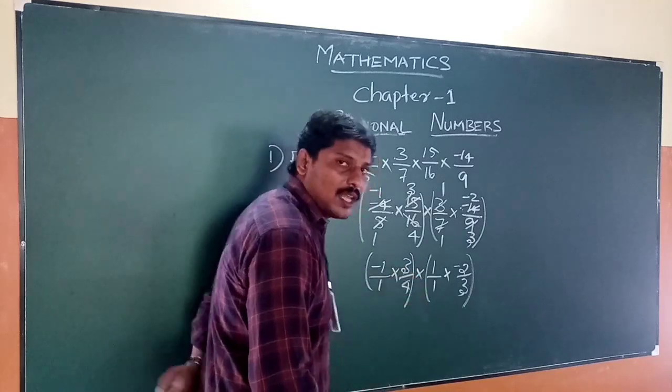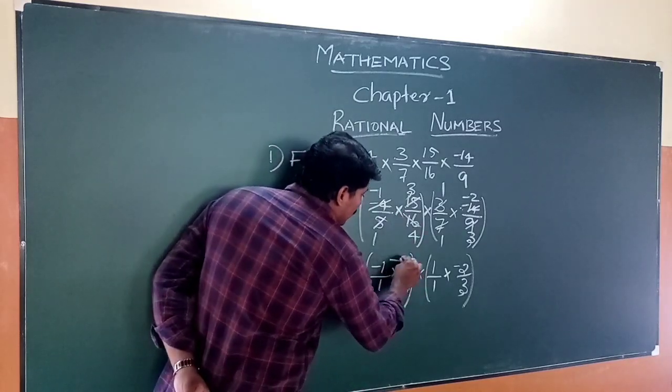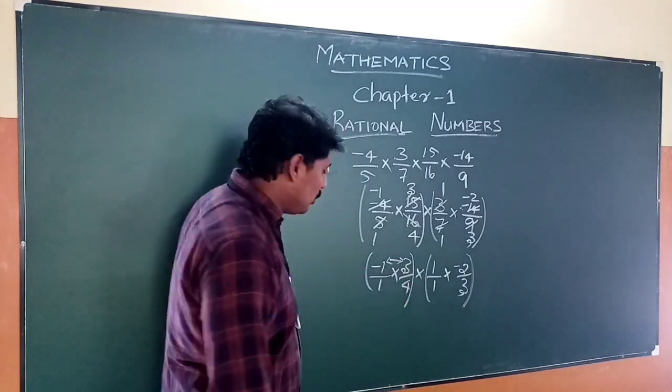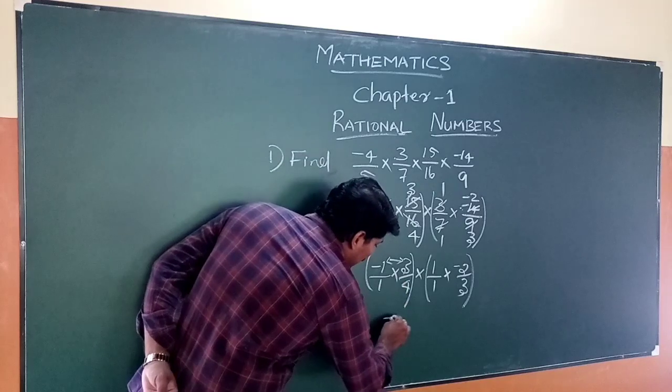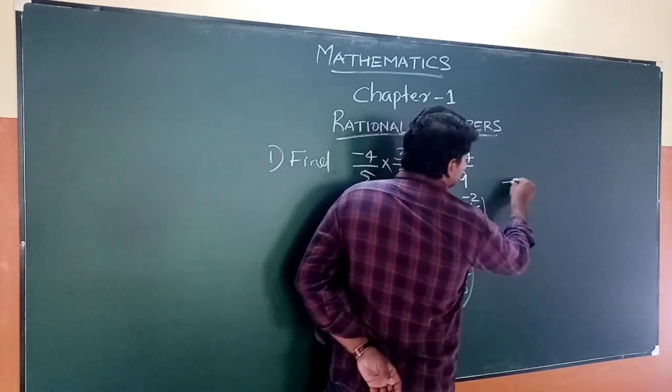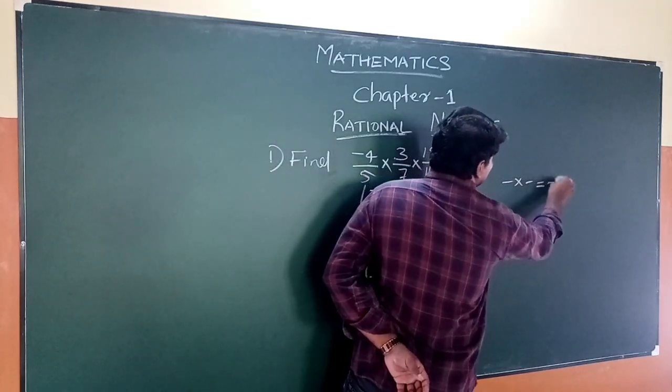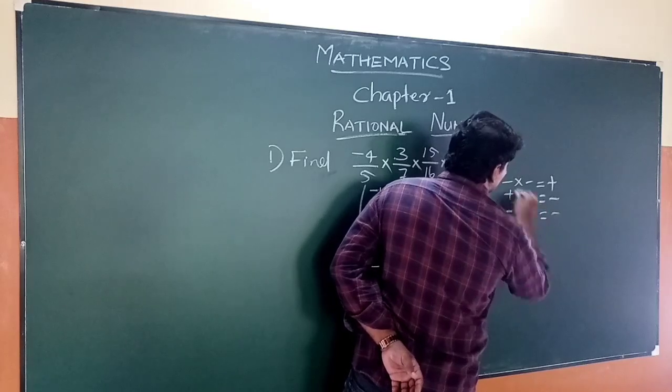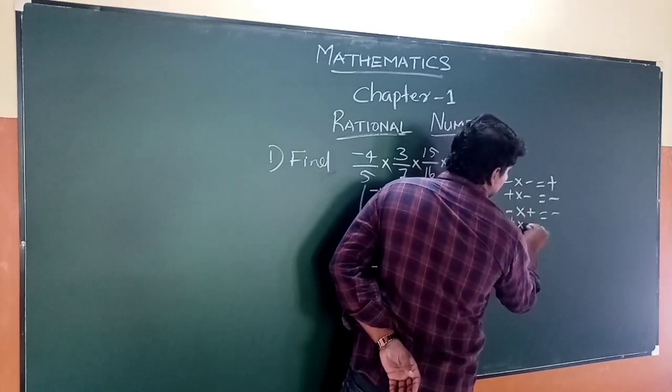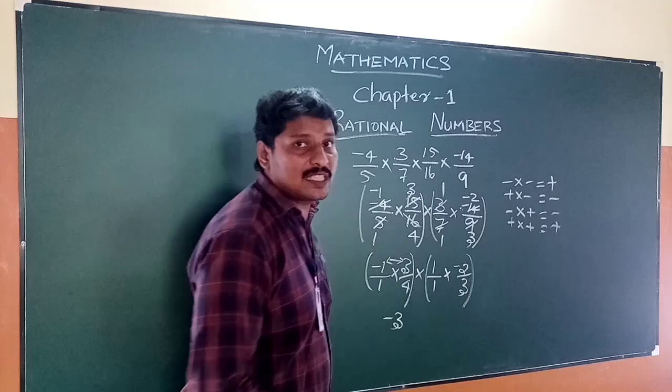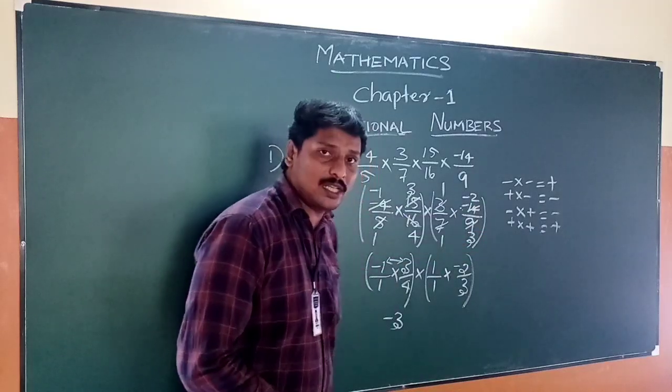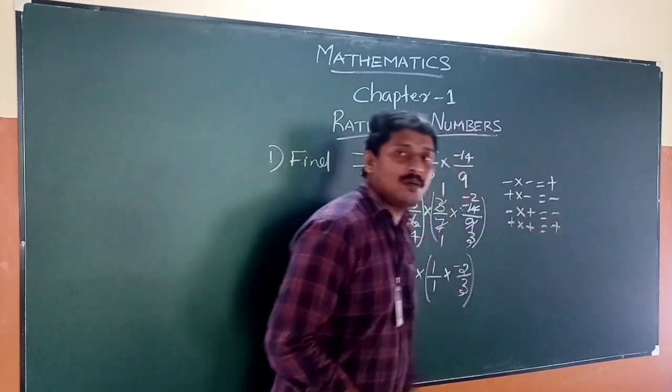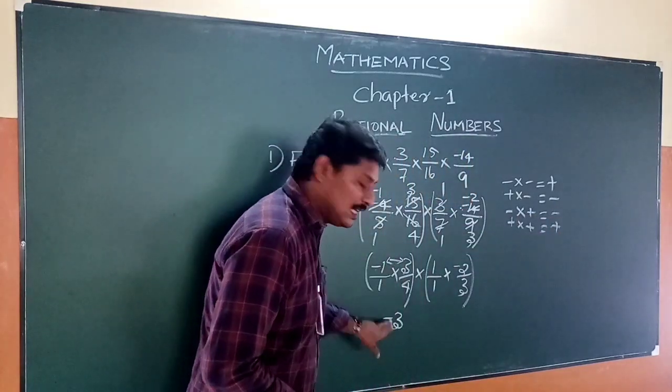Now we multiply the numerators and denominators. Remember the sign rules: minus times plus equals minus, minus times minus equals plus, and plus times minus equals minus. Minus 1 times 3 gives us the numerator.